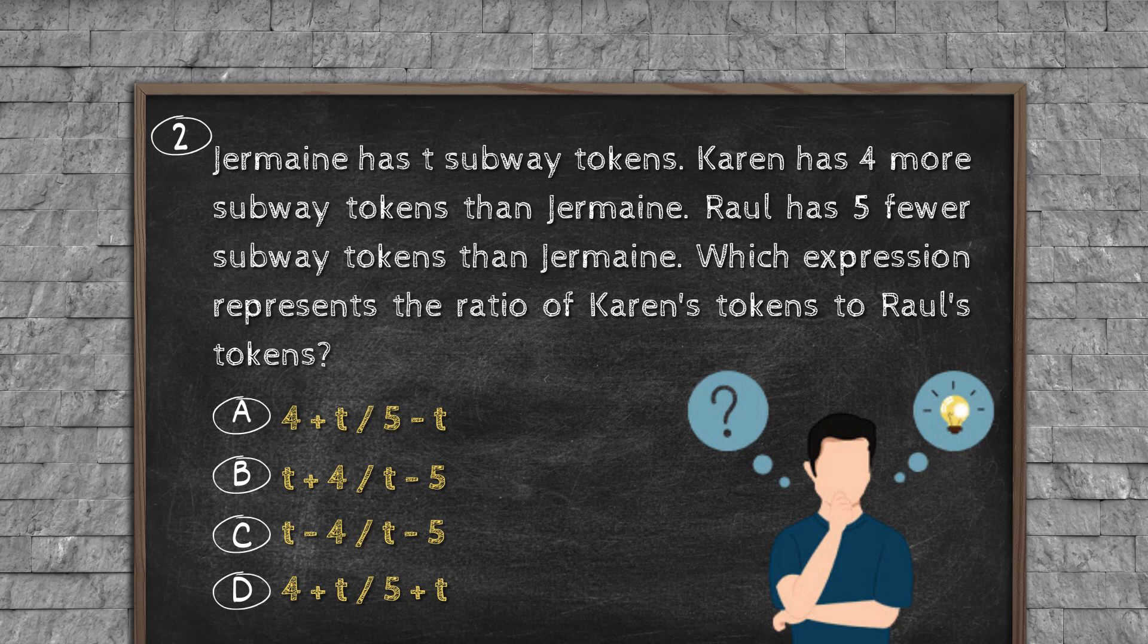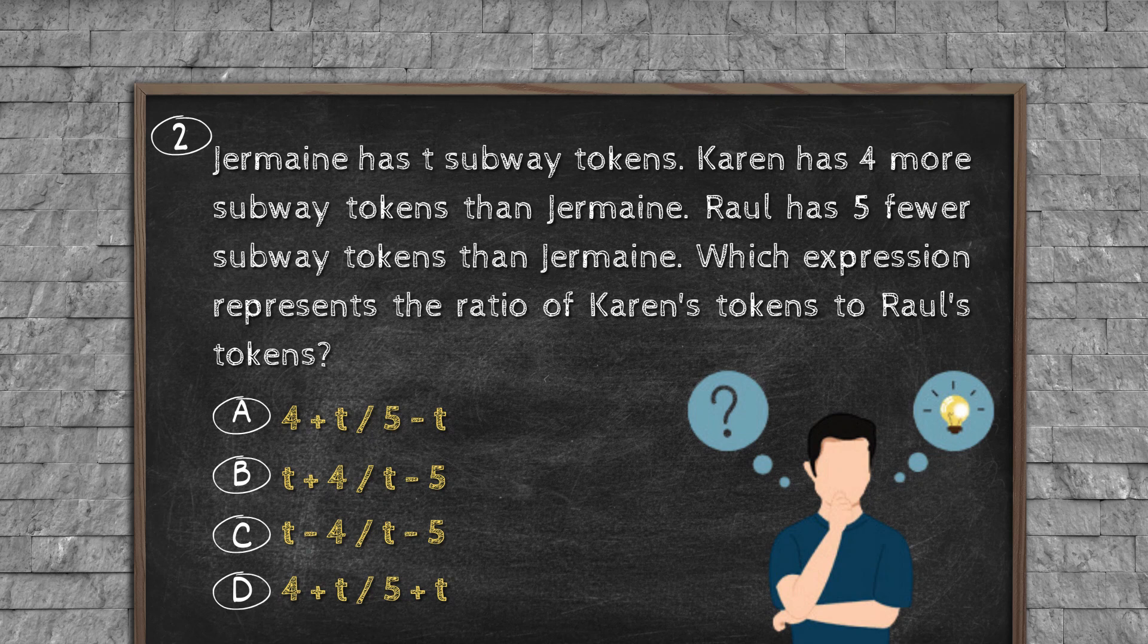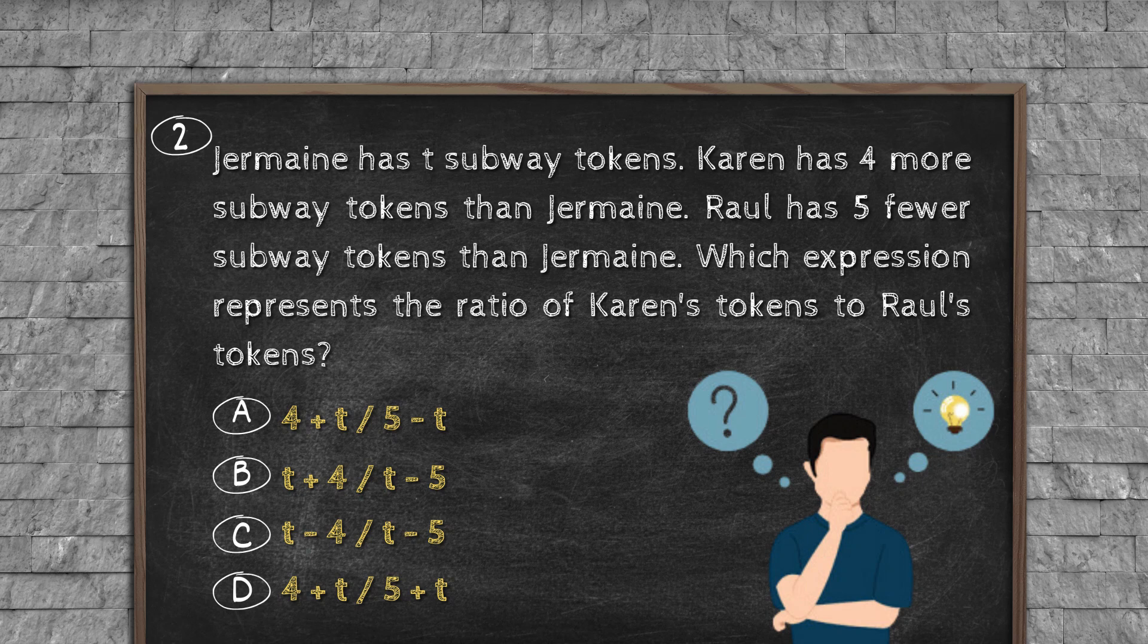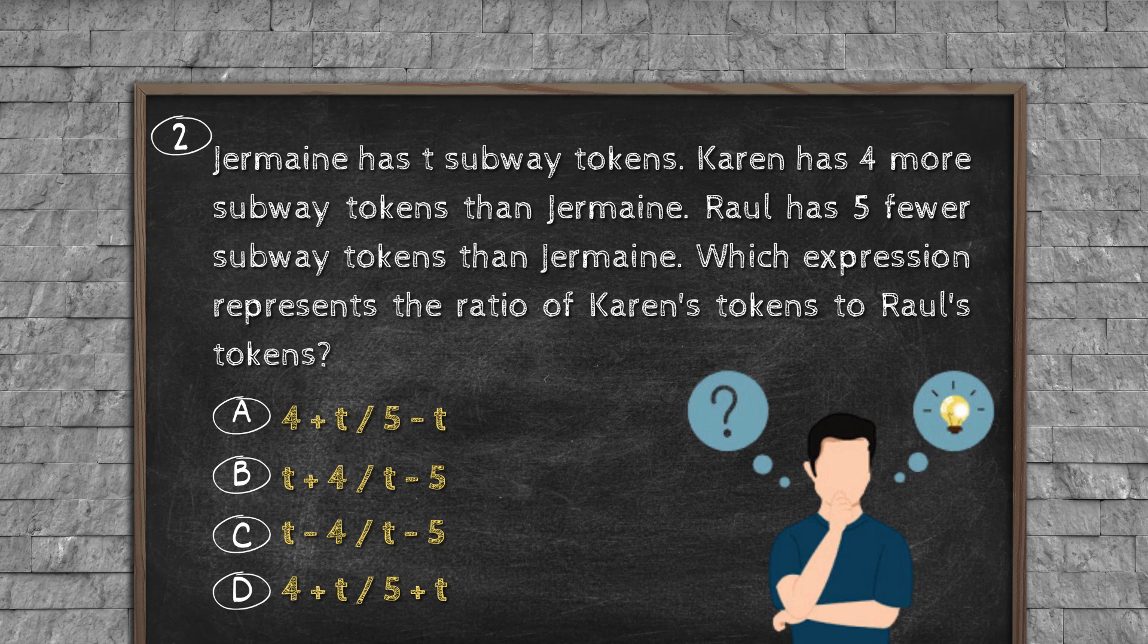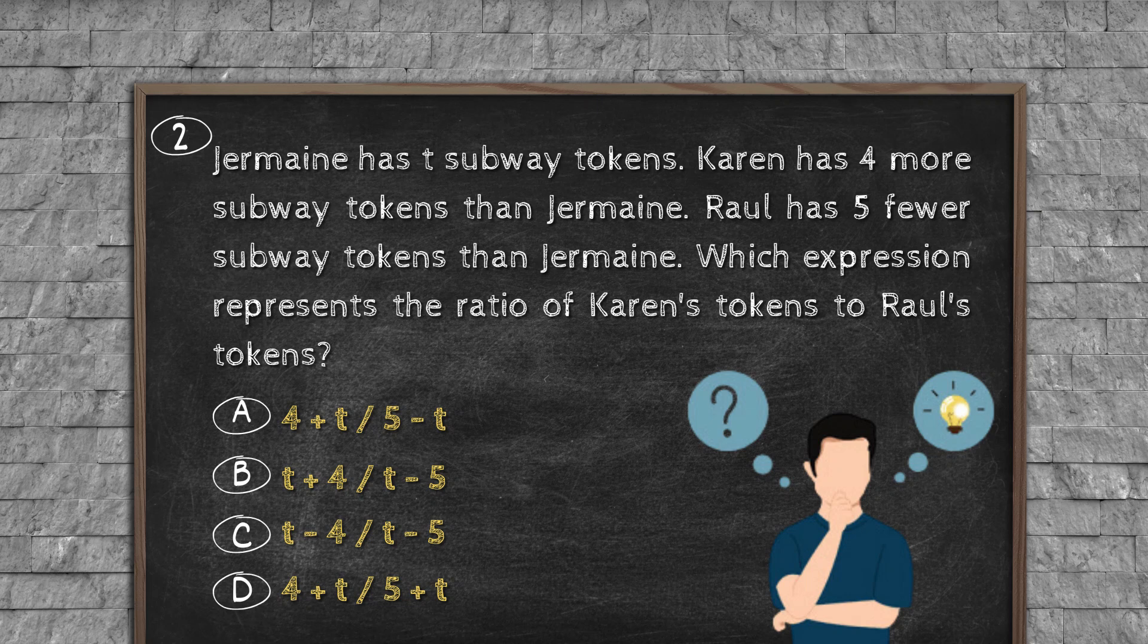Question number two: Jermaine has T subway tokens. Karen has four more subway tokens than Jermaine. Raul has five fewer subway tokens than Jermaine. Which expression represents the ratio of Karen's tokens to Raul's tokens? Option A: 4 + T/5. Option B: (T + 4)/(T - 5). Option C: (T - 4)/(T - 5). Option D: (4 + T)/(5 + T).